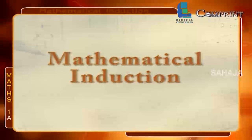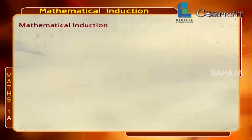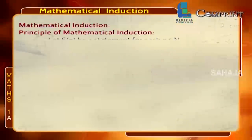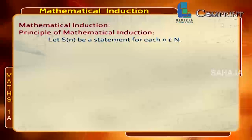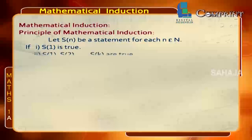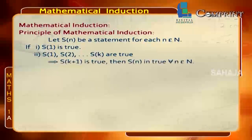Principle of Mathematical Induction: Let S be a statement for each n belonging to the natural numbers. If S(1) is true, and S(1), S(2), and so on up to S(k) being true implies S(k+1) is also true, then S(n) is true for all n belonging to the natural numbers.